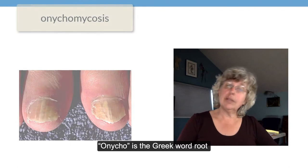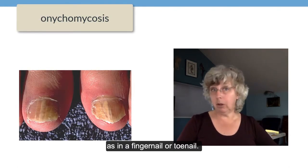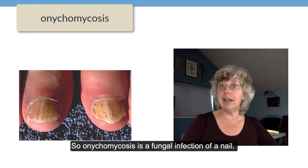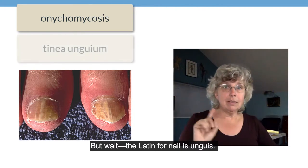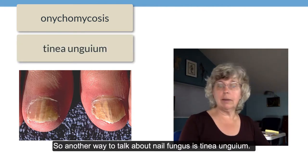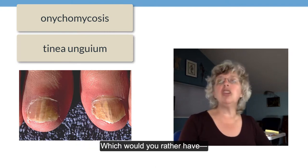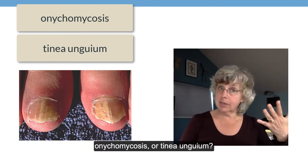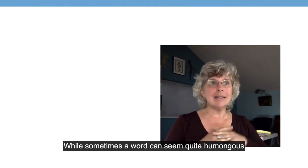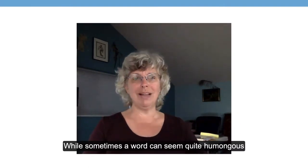Onyco is the Greek word root for nail, as in a fingernail or a toenail, so onychomycosis is a fungal infection of a nail. But wait — the Latin for nail is unguis, so another way to talk about nail fungus is tinea unguium. Which one would you rather have: onychomycosis or tinea unguium? Well, sometimes a word can seem quite humongous.